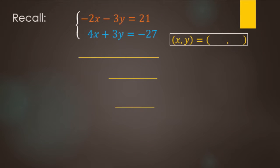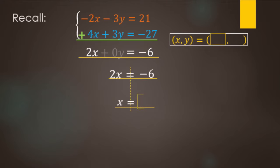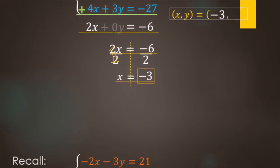Quick review on the simple ones — we're going to use addition and just add straight down: negative 2x plus 4x, negative 3y plus 3y, and 21 minus 27. We add straight down and notice that the y's were eliminated — there are zero of them — so we're left with 2x equals negative 6. Divide by 2 and we get x equals negative 3.